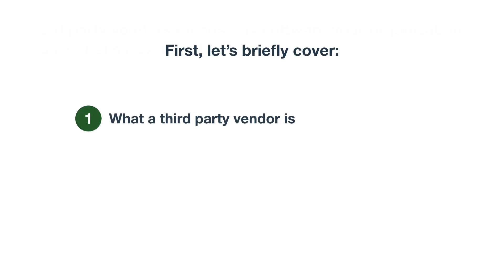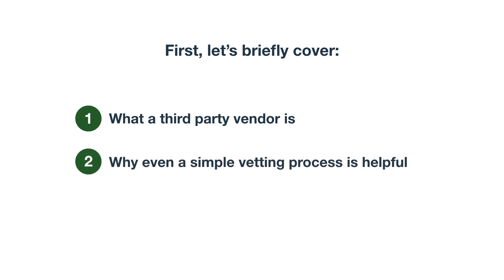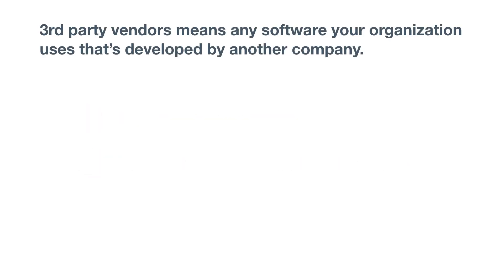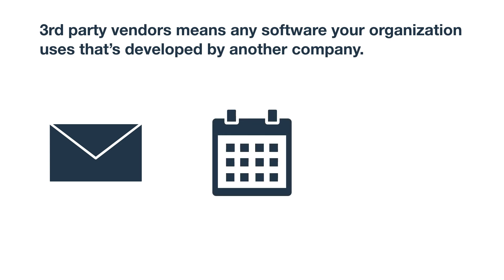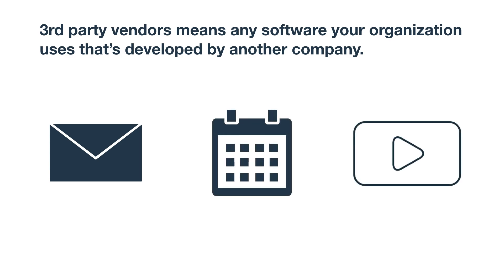Before we get into how to vet a third-party vendor, let's briefly cover what a third-party vendor is and why even a simple vetting process can help. When we say third-party vendors it means any software your organization uses that's developed by another company. This can be email clients like Outlook, calendar pickers added to your website, video players like YouTube, and the list goes on and on.